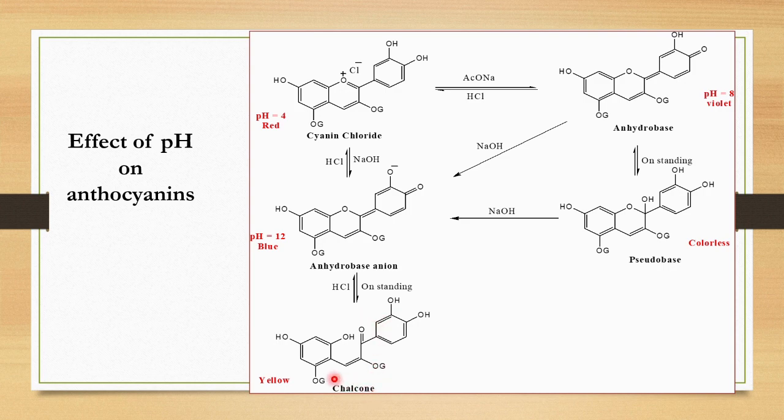So we have seen that at different pH values — pH 4, 8, and 12 — different types of coloration are produced by anthocyanins.